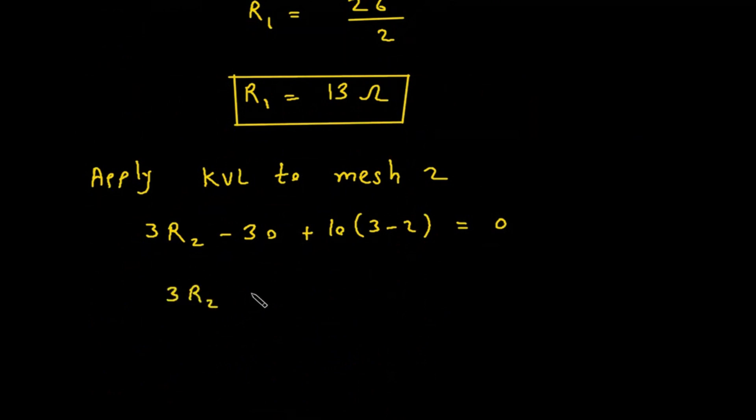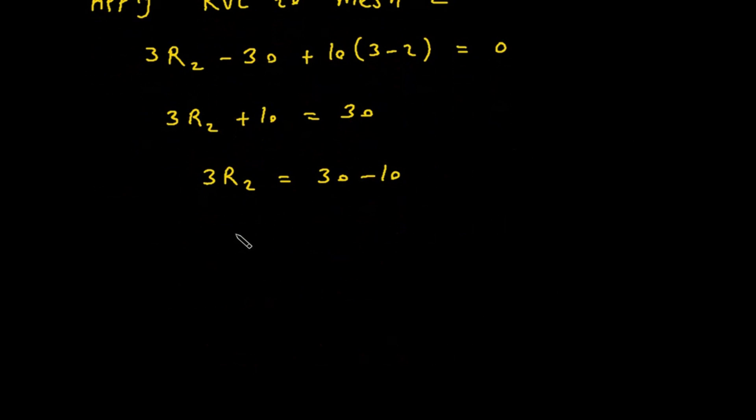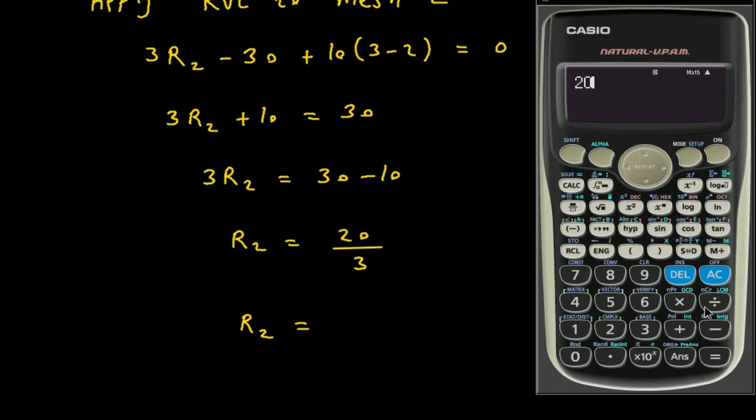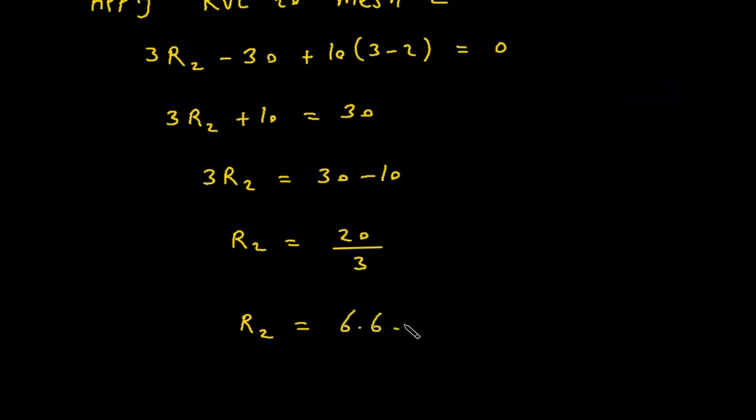So 3R2. Then this will be, 3 minus 2 is 1. So this will be plus 10 only. And if this goes on right side, so this will be plus 30. Therefore 3R2 is equal to 30 minus 10. Therefore R2 is equal to, this will be 20 divided by 3. So R2 is equal to, 20 divided by 3 is 6.6. 6.6 ohm.